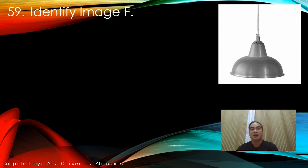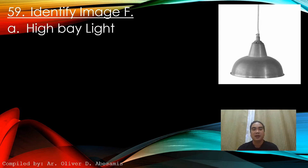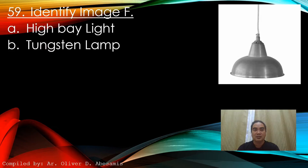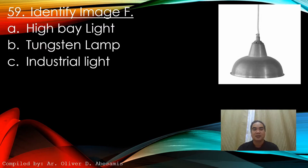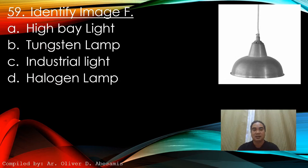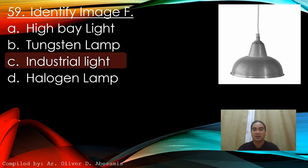Identify the image. A. High bay light. B. Tungsten lamp. C. Industrial light. D. Halogen lamp. Answer: C. Industrial light.